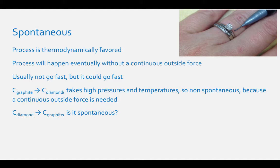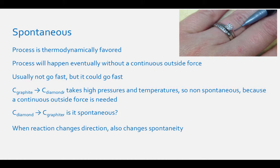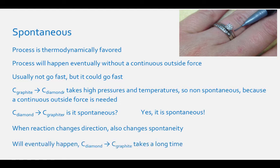So let's consider the reaction happening the opposite way — diamond converting to graphite. I know most of you have seen diamonds and have never seen them converting to graphite, but is this a spontaneous process? When a reaction changes direction, it also changes spontaneity. So if the reverse reaction, graphite to diamond, is non-spontaneous, then diamond to graphite is spontaneous. This is because spontaneous for a chemist means it will eventually happen — diamond will eventually turn to graphite, but it might take millions of years.